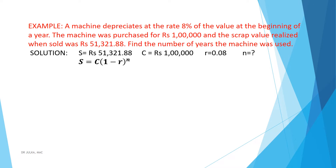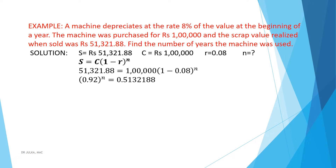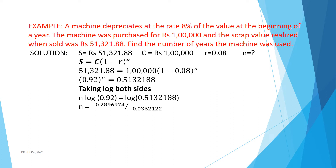R is 8%, which implies R equals 0.08, and we want to calculate N. We know that S equals C multiplied by (1 minus R) raised to the power N. Putting C equals 1,00,000, S equals 51,321.88, and R equals 0.08, after calculation we get 0.92 raised to the power N equals 0.5132188. Taking log on both sides: N log 0.92 equals log 0.5132188. Using a simple calculator, log 0.92 equals minus 0.0362122 and log 0.5132188 equals minus 0.2896974. After calculation we get N equals 8 years.